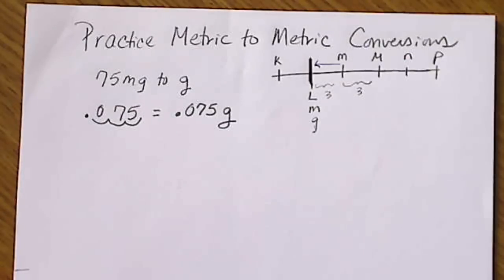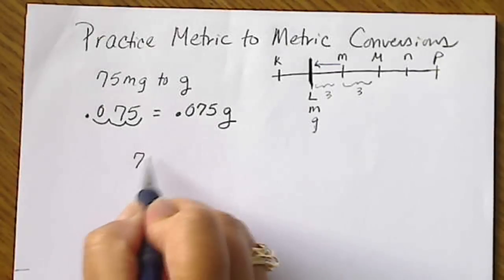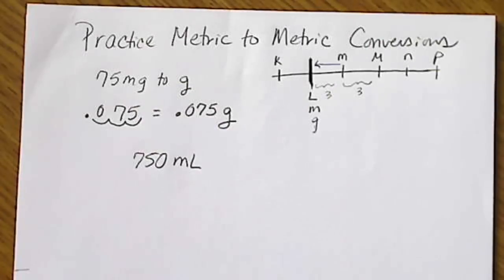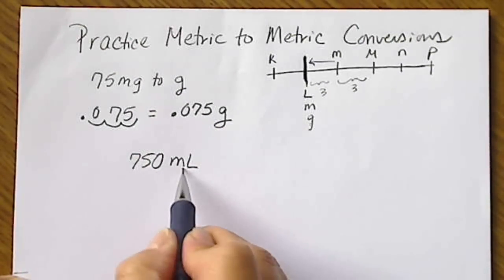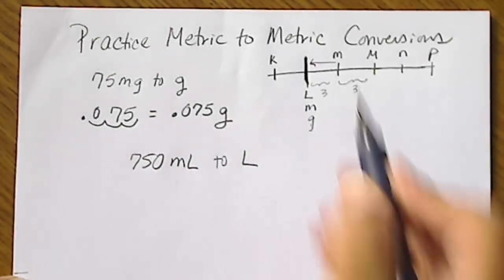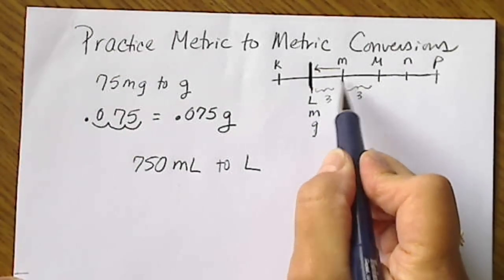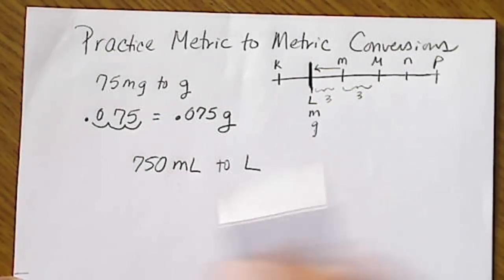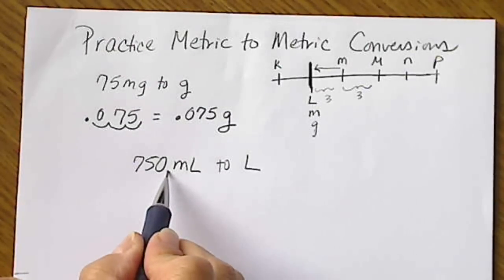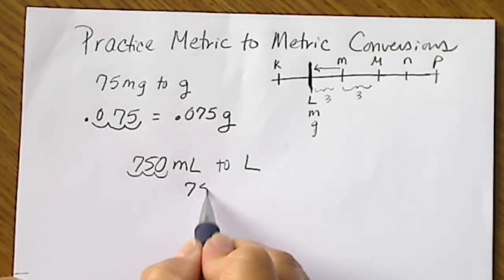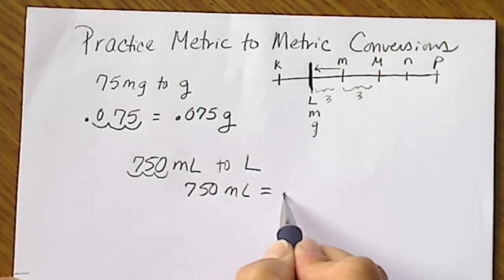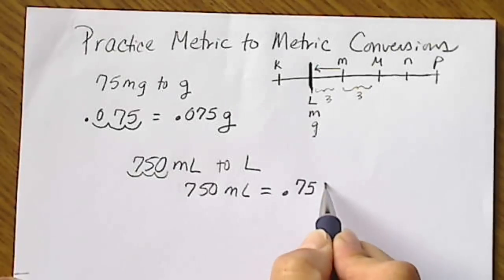A common unit that we're going to convert between would be liters and milliliters. So if you have a 750 milliliter container that has a beverage in it, if we want to convert 750 milliliters to liters, again, milli is here. We're going to move from milli to the unit liter, and we'll do that by moving the decimal one, two, three places to the left. 750 milliliters becomes 0.75 liters.